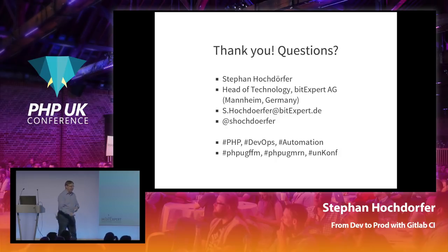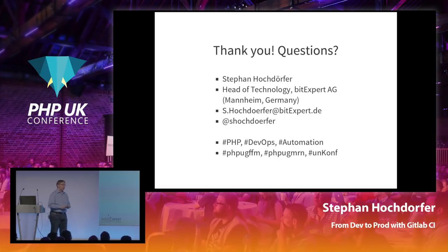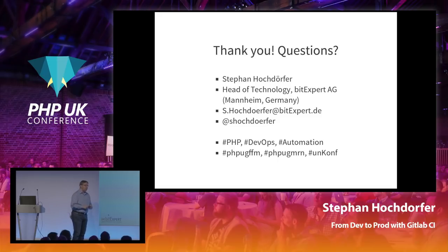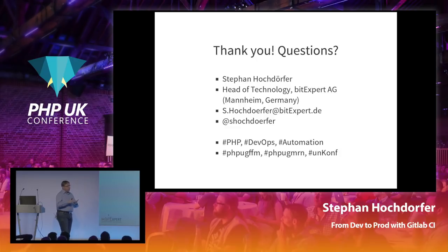Q: On your first slide about creating a project, there was a third tab: 'Import from an existing project.' Does that re-import the whole Git repository into GitLab or can you run it on something you already have locally? A: You can run it against a custom Git repository hosted anywhere. You can import from GitLab, GitHub, maybe also Bitbucket. In those cases it also imports open issues and all that metadata — so it really grabs the whole thing.